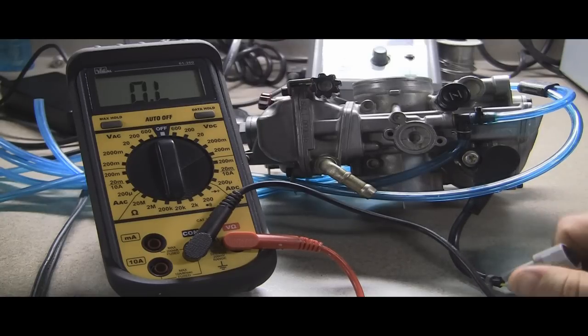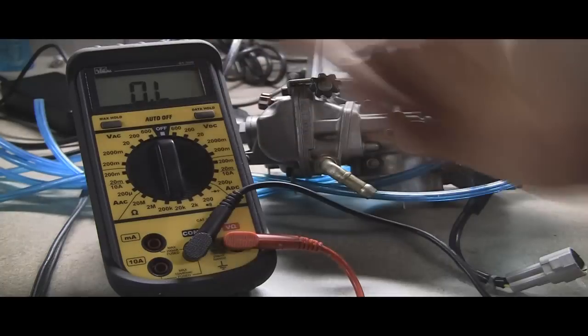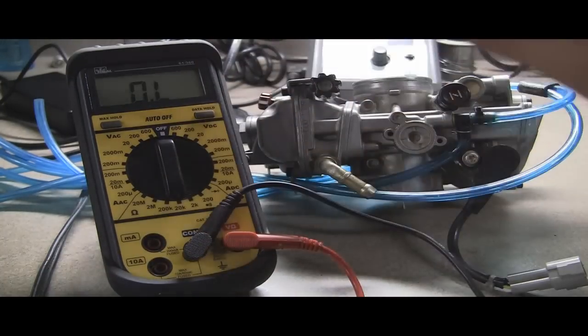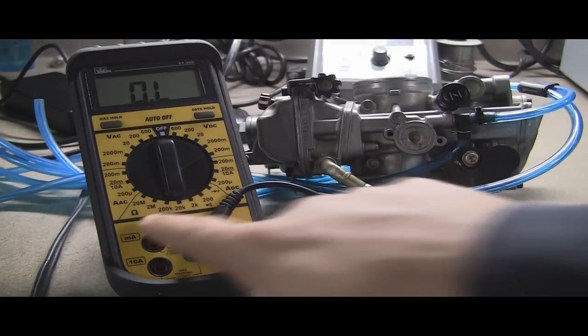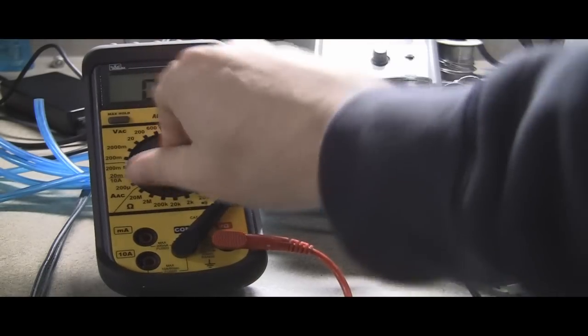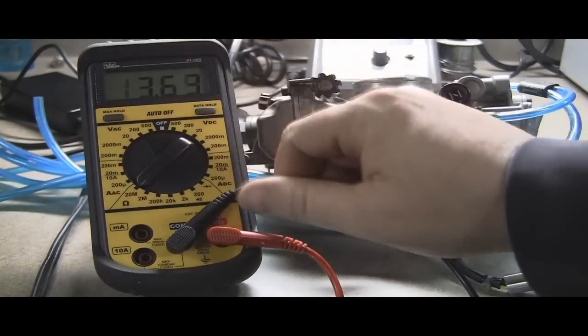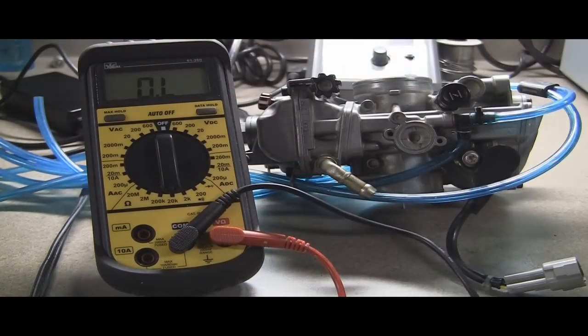First thing we're going to do is have the multimeter set up. We've got this set up on 20K here, 200K would give us the same reading on our ohm setting down here. So here is off, and then you've got your ohms, which is there, and we'll go to 20K.